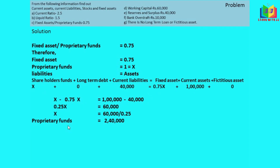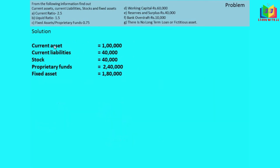Now we have the proprietary fund. The fixed asset equals 0.75 into 2,40,000, which is 1,80,000. Now we have all balance sheet items: current assets, current liabilities, stock, proprietary fund, and fixed asset.